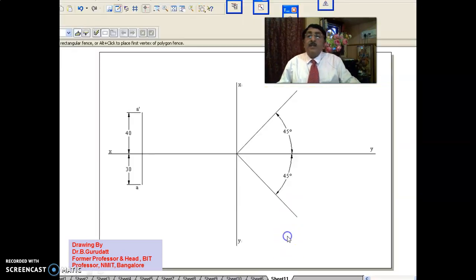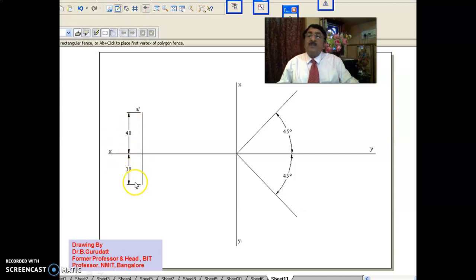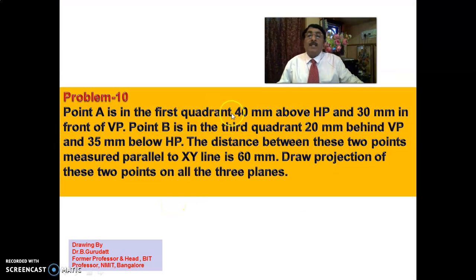Since it is the 1st quadrant — above HP in front of VP — with 40mm above HP and 30mm in front of VP, this is VP and this is HP. So A-dash and A are located accordingly. Point A is in the first quadrant, 40mm above HP and 30mm in front of VP — already done.